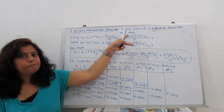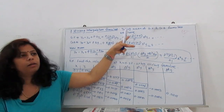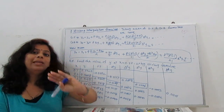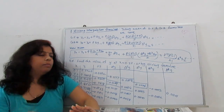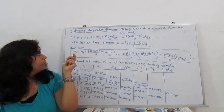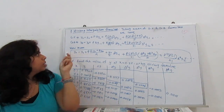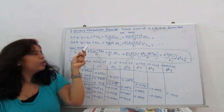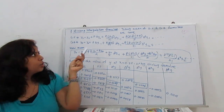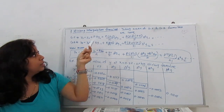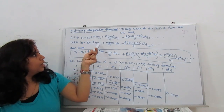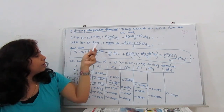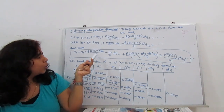Now we take the term-by-term mean of both formulas. If a term is 'a' in one formula and 'b' in the other, we compute (a+b)/2. For the y0 term: 2y0/2 = y0. For the first difference term: p·Δy₋₁ from backward and p·Δy0 from forward, giving p·(Δy₋₁ + Δy0)/2.